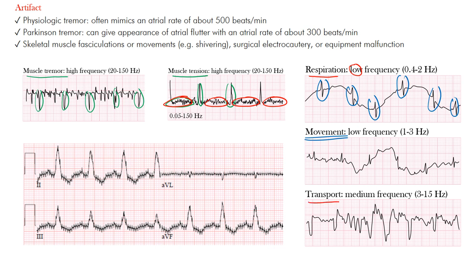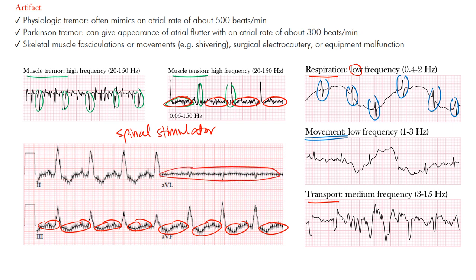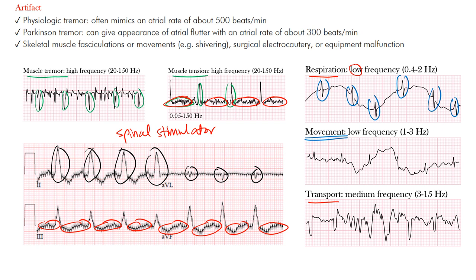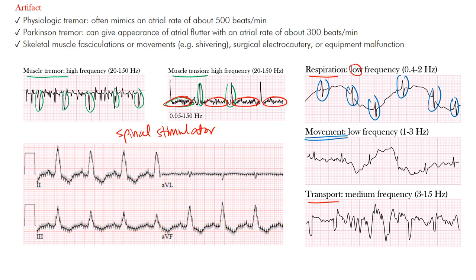Always be aware of what the patient is doing. During transport — for example, taking a patient to get a CT — you may notice artifact and think the patient is in ventricular arrhythmia or V-fib. Always be aware that artifact can arise in that context, and that's why looking at the patient is important. There's also an interesting one with a spinal stimulator. Some patients have these placed, and you can see almost pacemaker-like spikes across the tracing, with regular spikes within them. It's good to know those aren't all pacemaker spikes — it's a spinal stimulator.